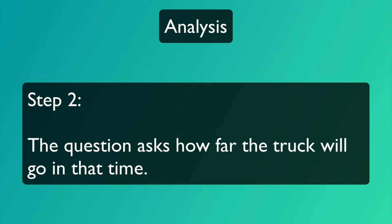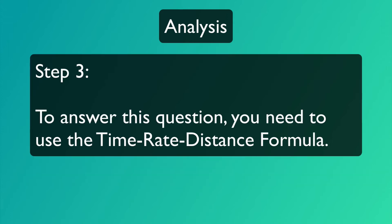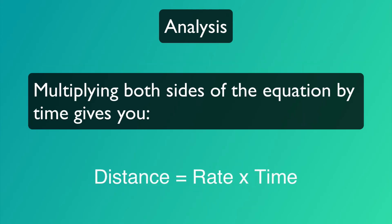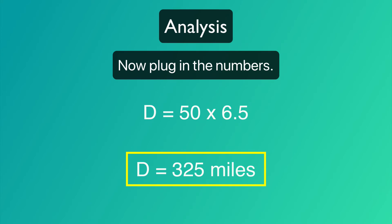Step 2. The question asks how far the truck will go in that time. Step 3. To answer this question, you need to use the time-rate-distance formula. Multiplying both sides of the equation by time gives you distance equals rate times time. Now plug in the numbers. 325 miles is your answer.